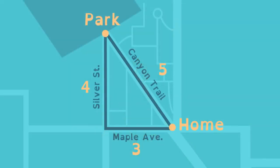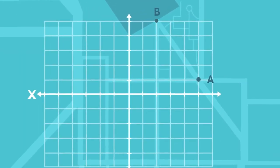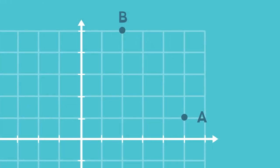What if Lucy doesn't know the lengths of Maple Avenue and Silver Street? A coordinate plane can help. Lucy's house and the park can be points on the plane, one at (5,1) and the other at (2,5).